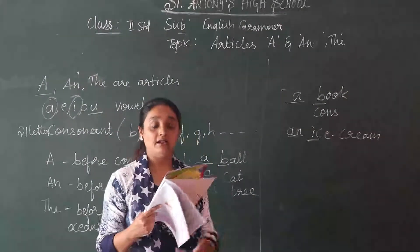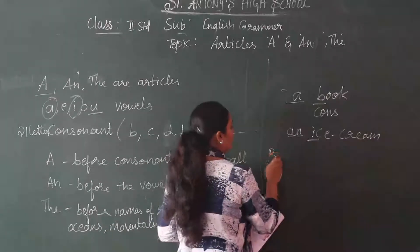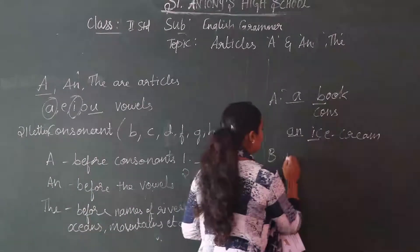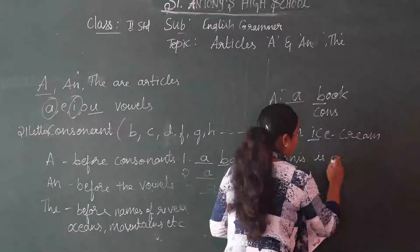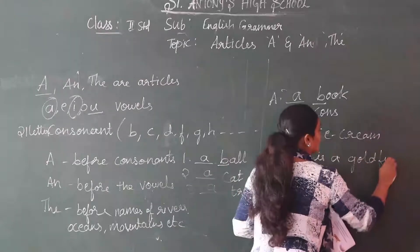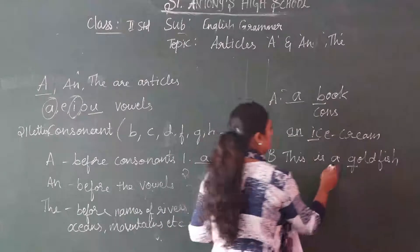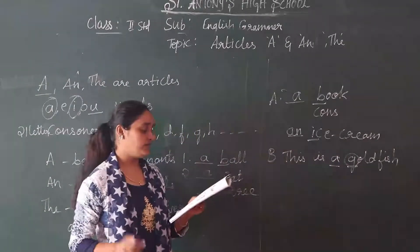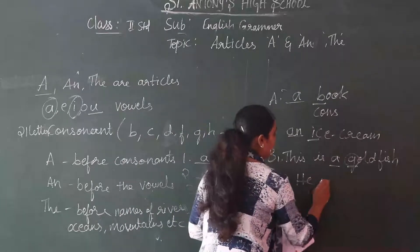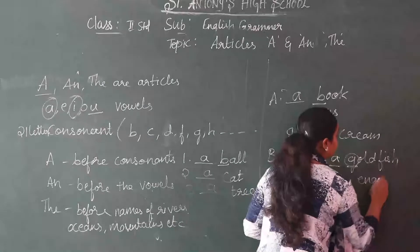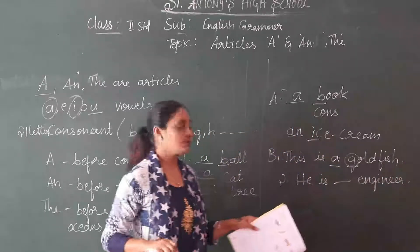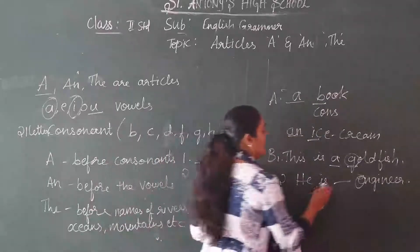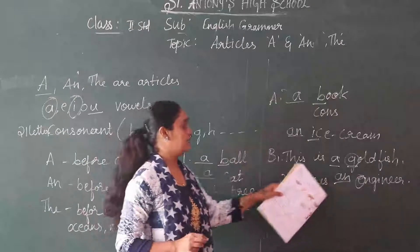Next, filling the blanks using A or AN. This is a dash goldfish. G is a consonant, so because of the consonant we have to use A — this is a goldfish. Second one — he is a dash engineer. What is E here? E is a vowel. So before the vowel what you have to write? AN. He is an engineer.